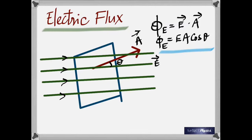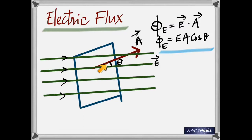You see the electric lines in this case? They are all pointing in one direction and they are at equal distance. So it's a constant electric field. A uniform electric field is always represented by lines that are equidistant and parallel to each other. And you see a surface kept in this field. The brownish line is a line drawn at right angles to the surface.